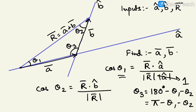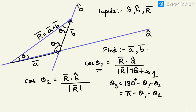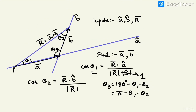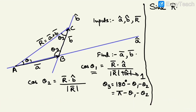Now we know all three angles theta1, theta2, theta3. To find A vector and B vector, we need their magnitude and direction. The direction we already know — â-cap and b̂-cap — so we just need to find the magnitudes. For this we use trigonometry: we apply the sine rule to the triangle with vertices A, B, and C.